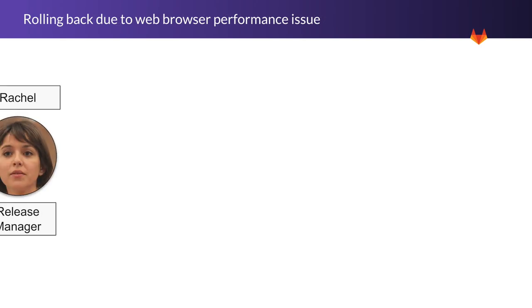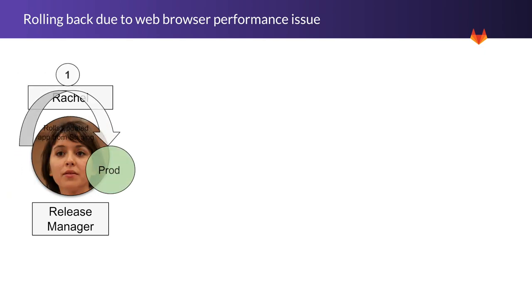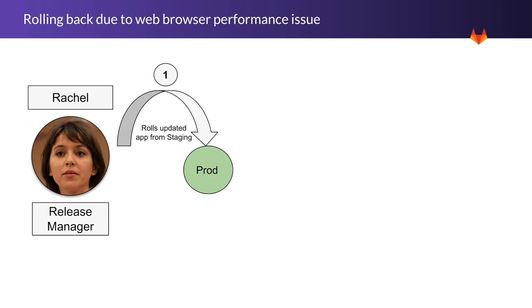Rachel, a Release Manager using GitLab, oversees the CI/CD pipelines that automate the continuous releases within her organization. In this first scenario, Rachel is going to roll out a new release of the application to production and she's going to do a sanity check on it.